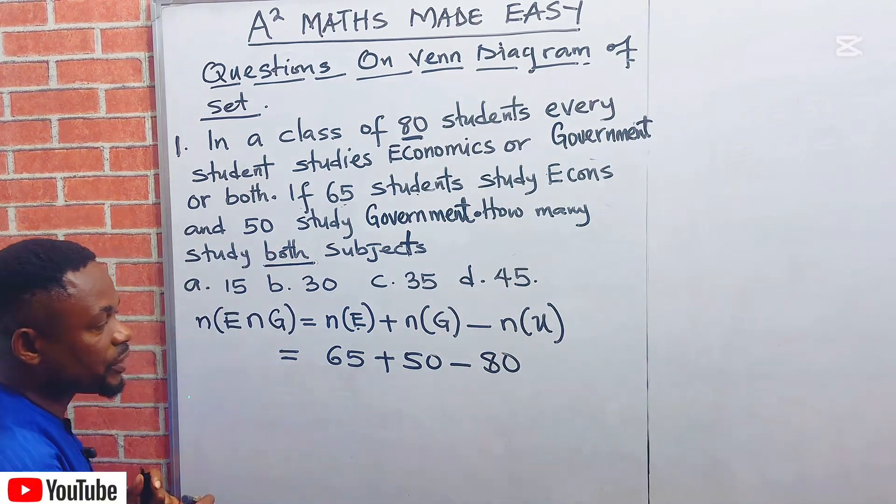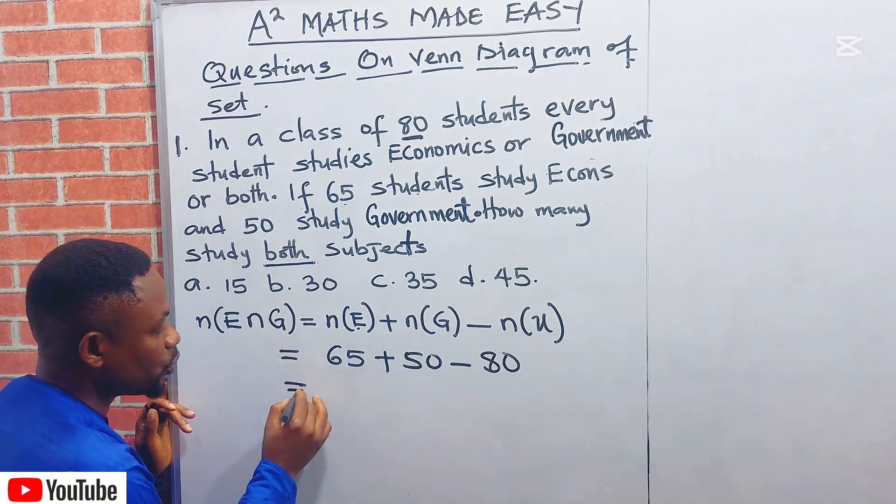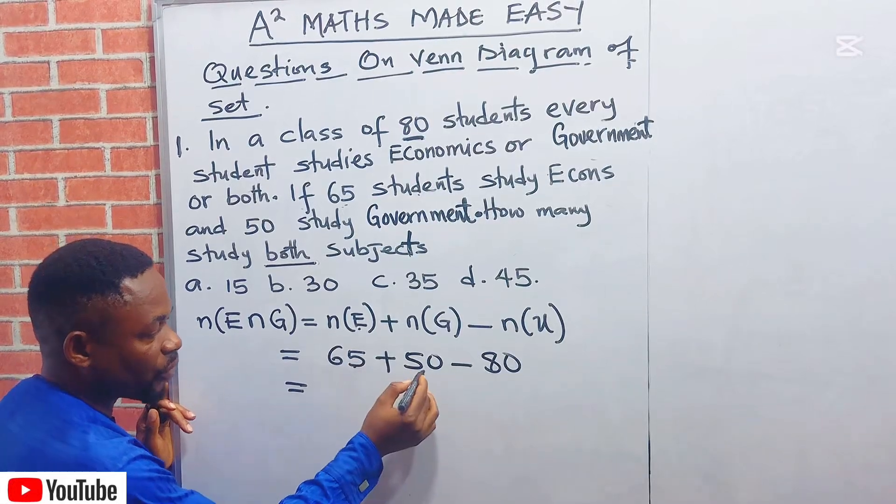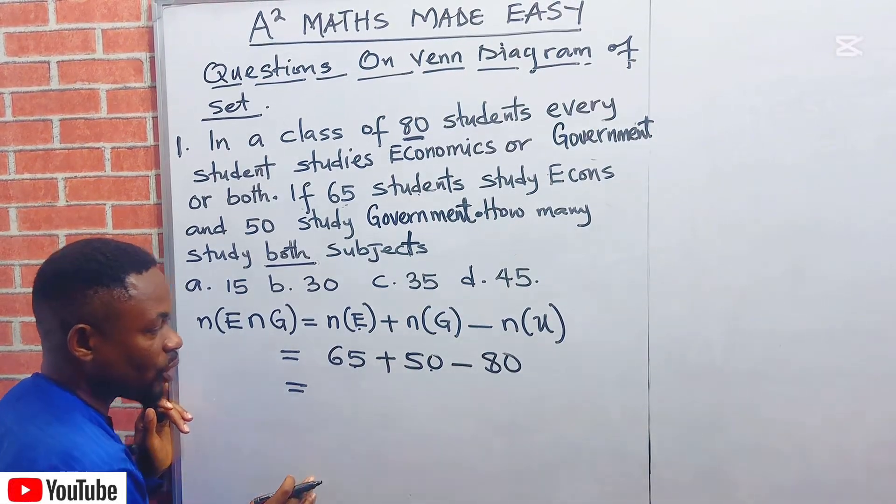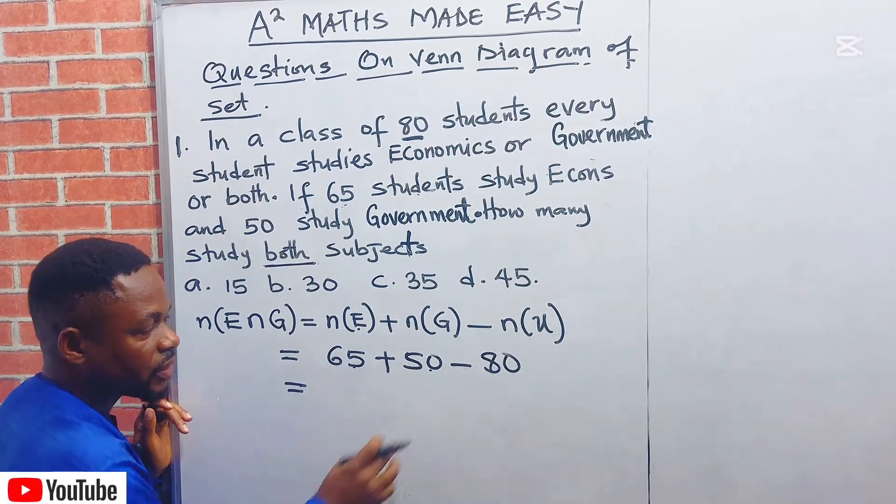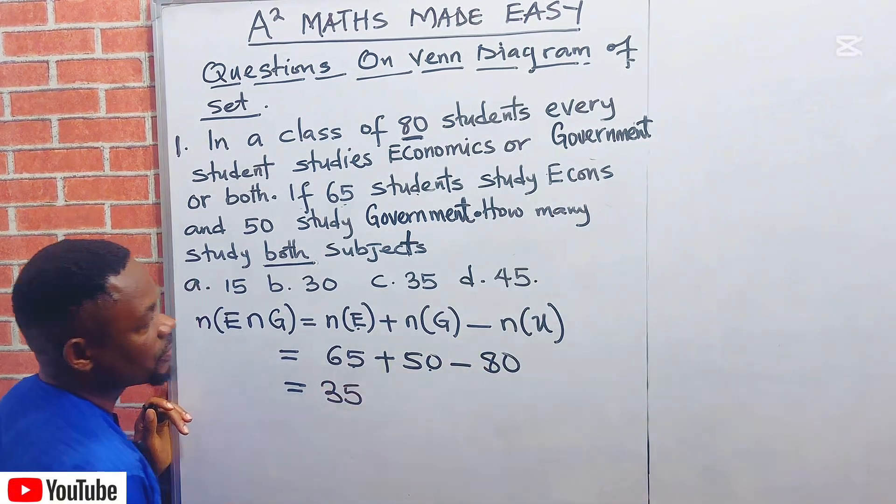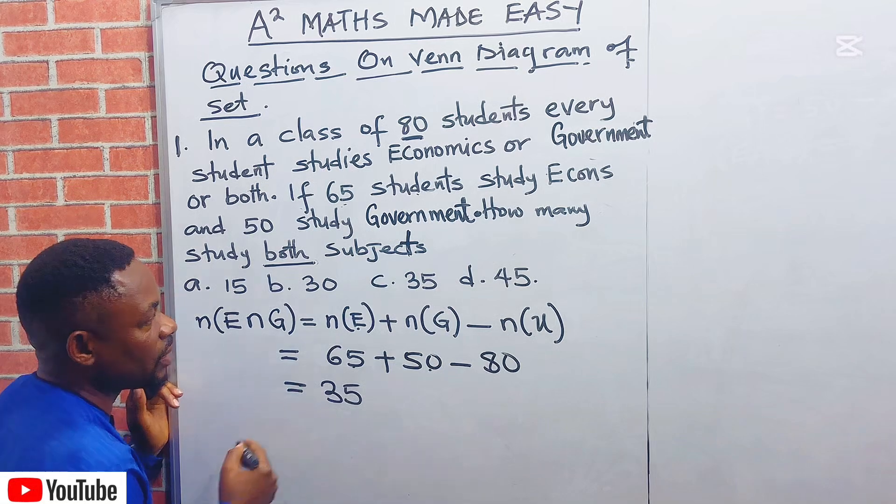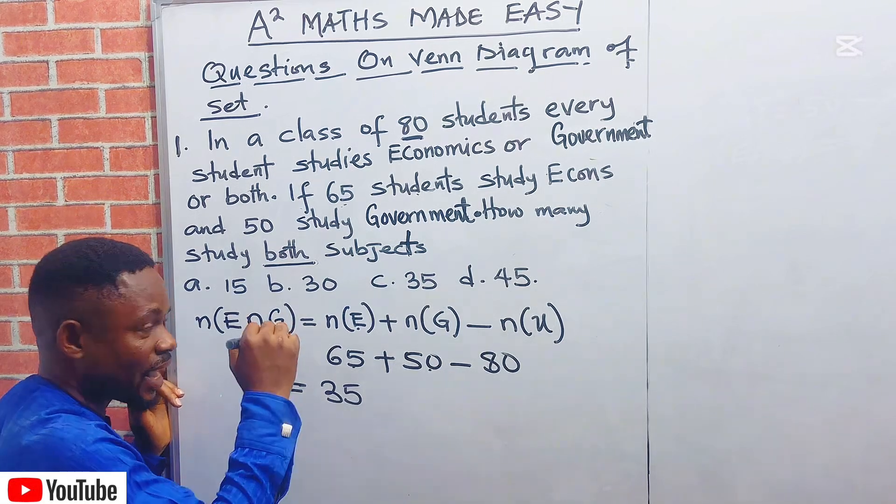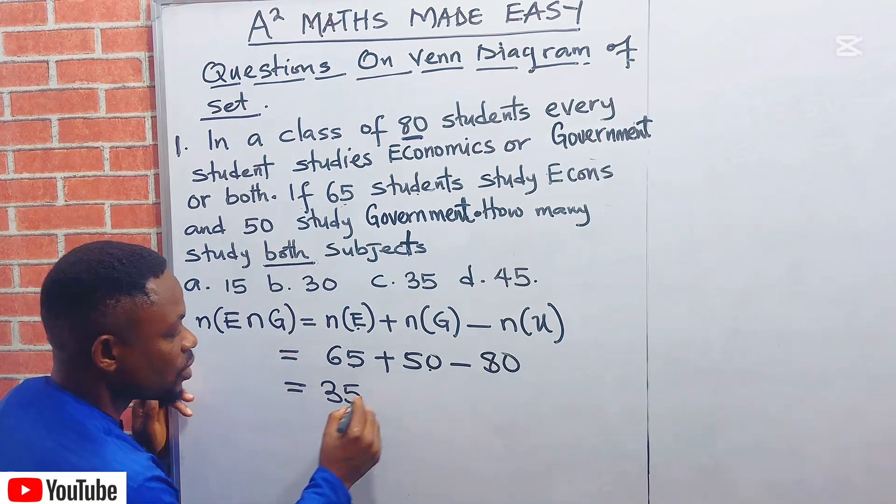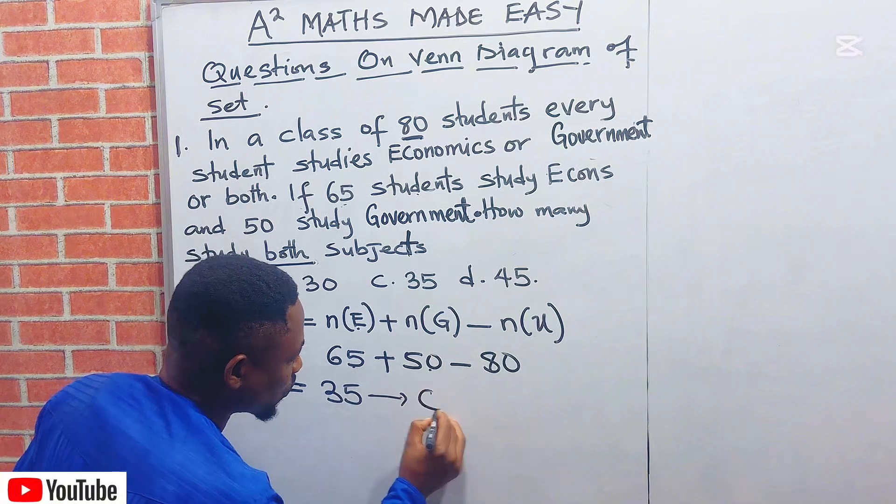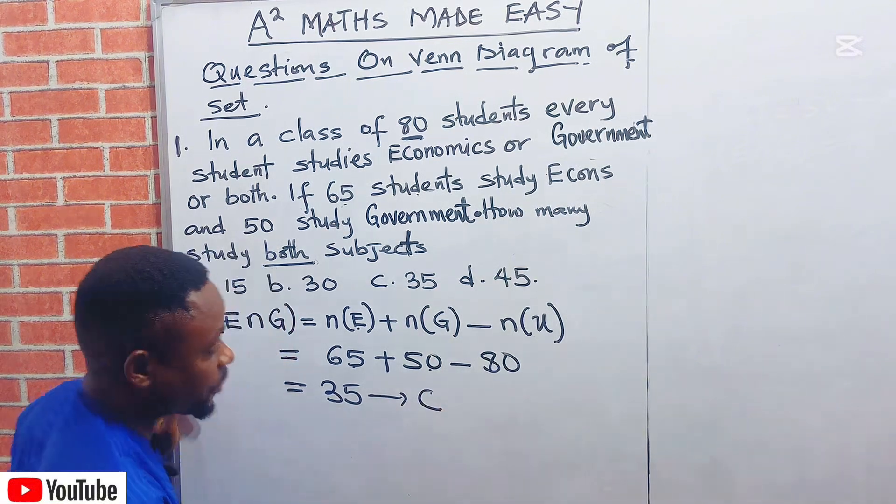Can you see that the answer has already appeared? What do we do? We now add 65 plus 50, which is 115. Then minus 80, which gives us 35. 35 students. Let's observe the option. Do we see anything like 35 in the option? Yes. Which means the correct answer there is C.